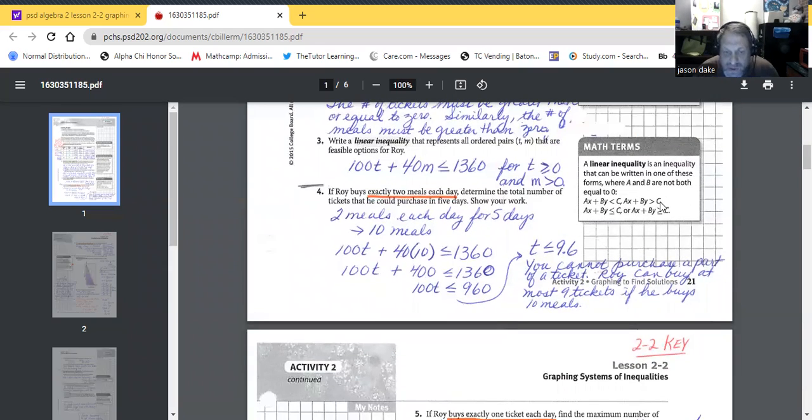Let's look at number three. Write a linear inequality that represents all ordered pairs T and M that are feasible options for Roy. And we talked about this: 100 tickets plus 40 meals is less than or equal to 1360, for T is greater or equal to zero and M is greater than zero.